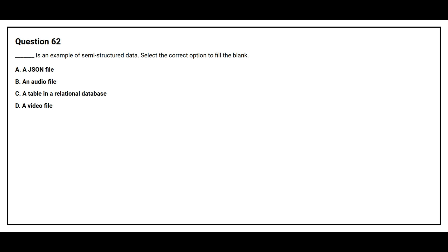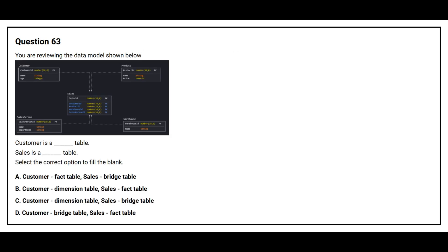Question 62: Which of the following is an example of semi-structured data? Option A, a JSON file. Option B, an audio file. Option C, a table in a relational database. Option D, a video file. The correct answer is Option A, a JSON file.